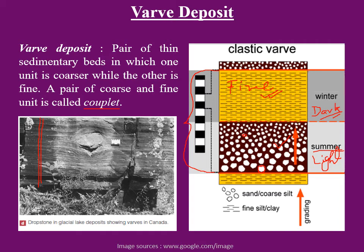In this picture, another interesting thing is seen: there is a large boulder trapped within these glacial lake sediments. You can see the alternate light and dark-colored layers as shown in this diagram. Within these fine alternate dark and light-colored layers, there is one large rock fragment trapped. Due to this rock fragment, the adjacent rock layers are also bending. This boulder is basically a glacial dropstone — we will come to how dropstones occur in the next slide.